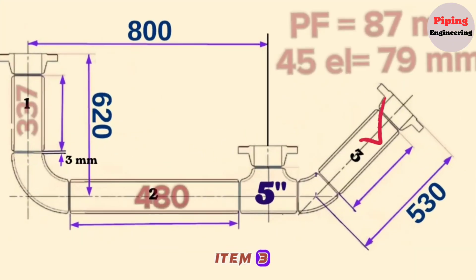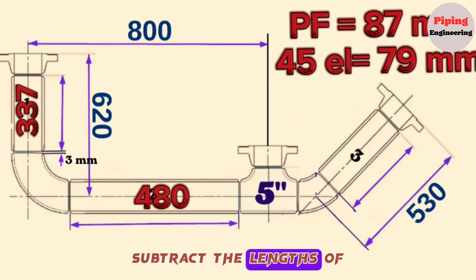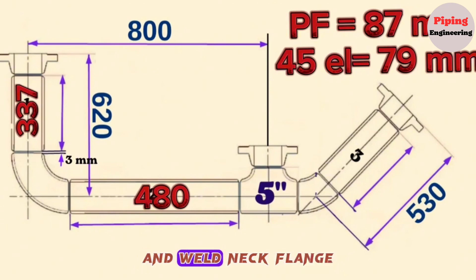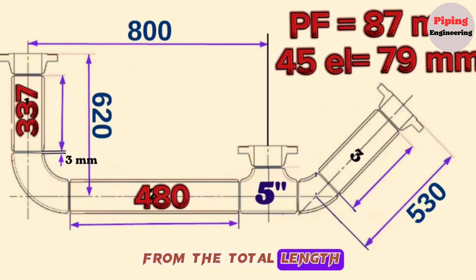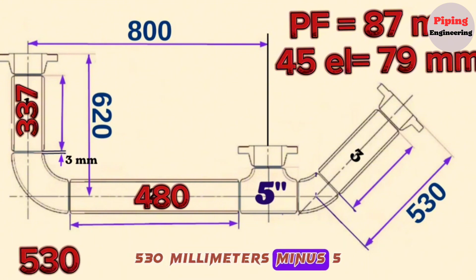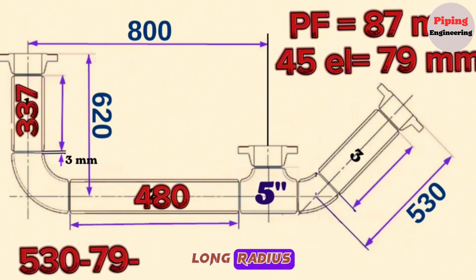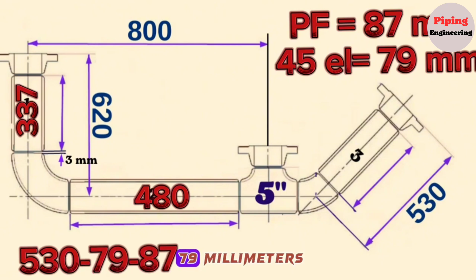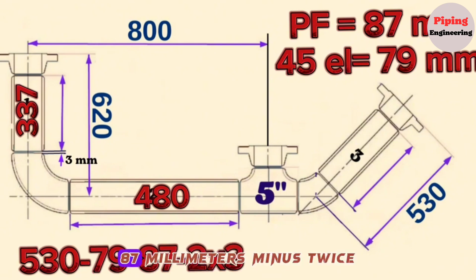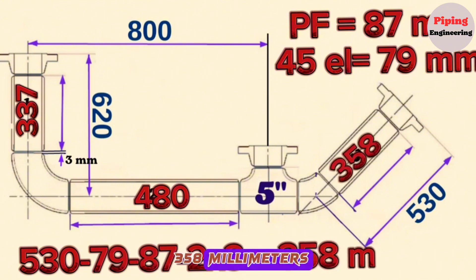Let's calculate the length of pipe piece Item 3. To find the length, subtract the lengths of the 45-degree elbow and the weld neck flange from the total length. Overall length 530 mm, minus 5-inch 45-degree long radius butt weld elbow 79 mm, minus 5-inch weld neck flange 87 mm, minus 2 × 3 mm welding clearance, equals 358 mm.